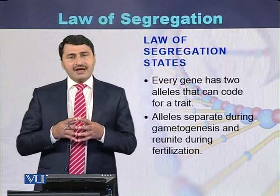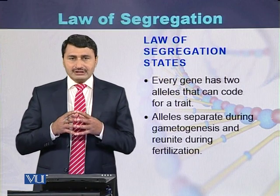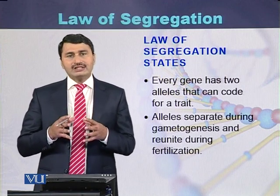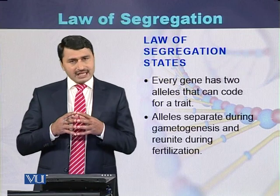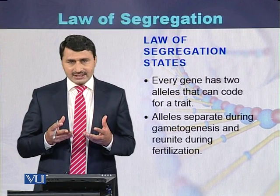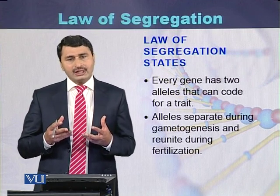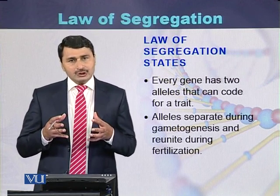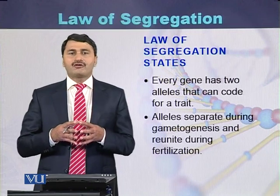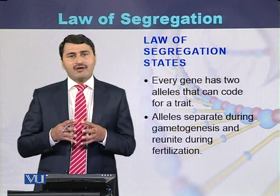To conclude, the law of segregation states that every gene has two alleles, and the gene encodes for a trait. These two alleles separate from each other during the process of gametogenesis, and the alleles unite with each other during the process of fertilization. This is the summary of the law of segregation.